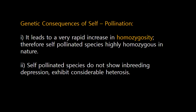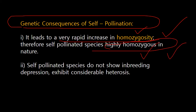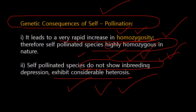Now let's look at the genetic consequences when plants are bred by self-pollination. First, there is a very rapid increase in homozygosity — meaning similar kinds of genes or alleles. Therefore, self-pollinated species are highly homozygous in nature. Second, they do not show inbreeding depression — that is shown by cross-pollinated plants. Self-pollinated species also exhibit some considerable heterosis. So to summarize: they are highly homozygous, do not show inbreeding depression, and show heterosis.